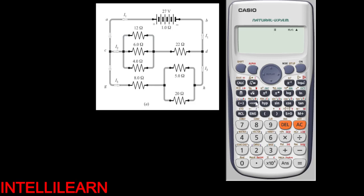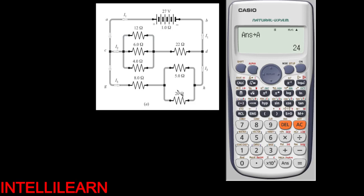So for these three resistors that are in parallel, the total will be 1 over (1/12 + 1/6 + 1/4). So we add it to the 22 because they are in series. So we have got 24. Let's store that as A.